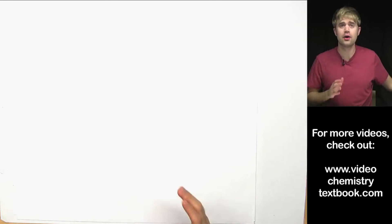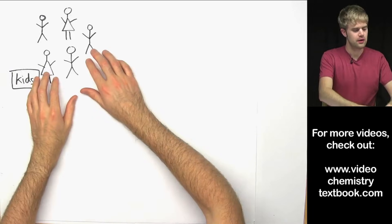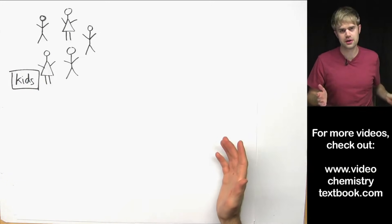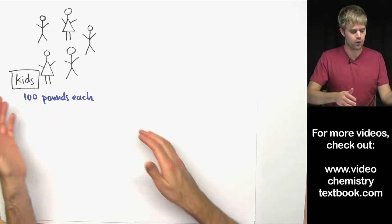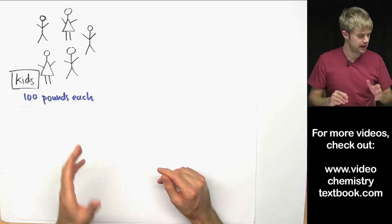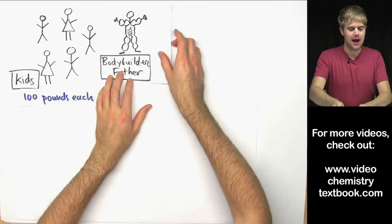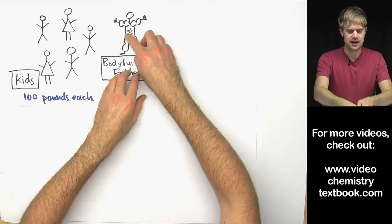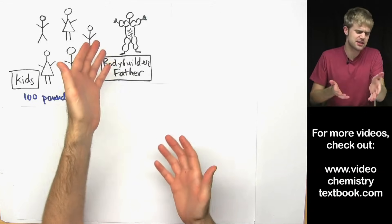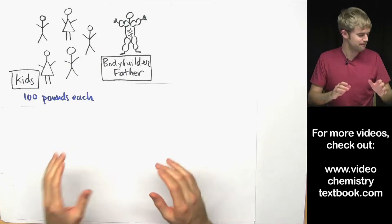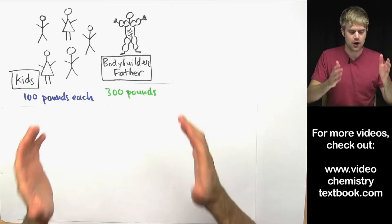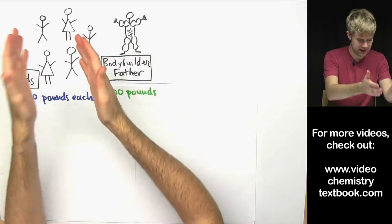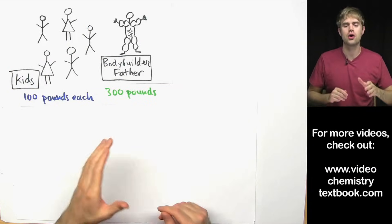Here's an example where we'd calculate a weighted average. We have a group of five kids — some boys and some girls — and for simplicity each one weighs 100 pounds. One of their fathers shows up and he's a bodybuilder who weighs 300 pounds. So now we have a group of six people: the kids at 100 pounds each and the father at 300 pounds.